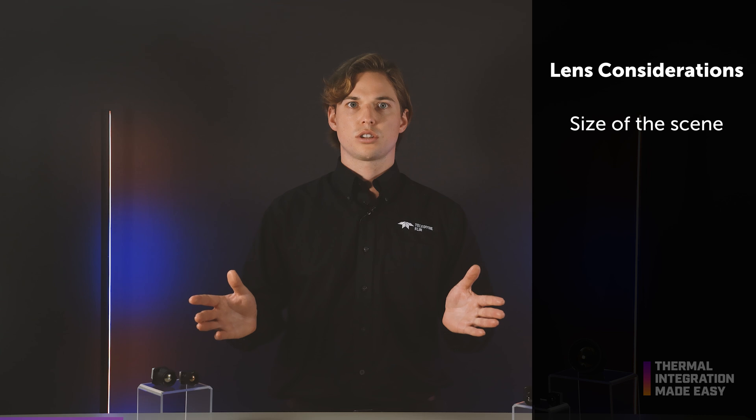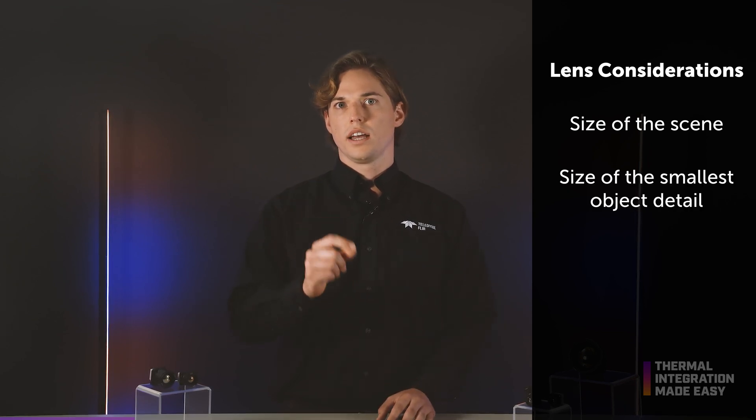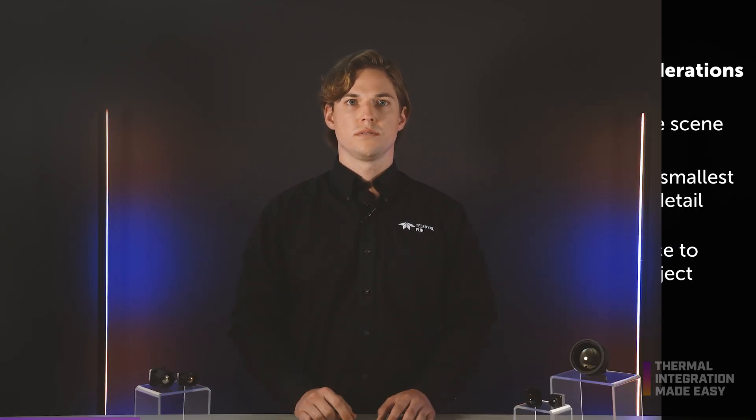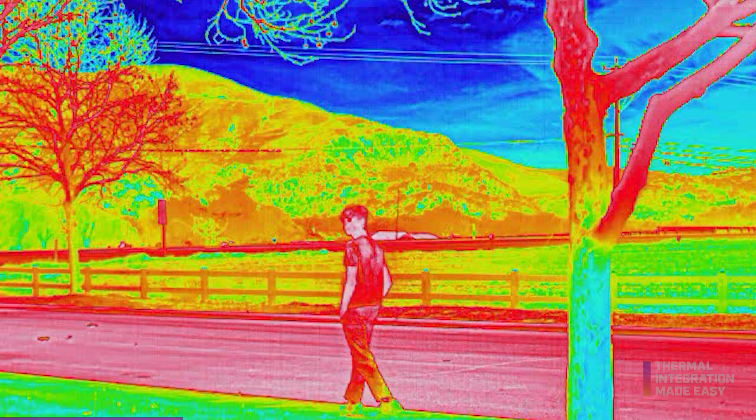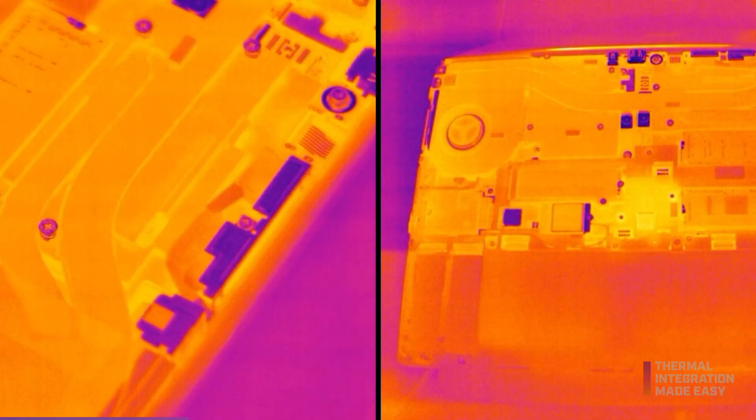There are many factors to consider when selecting a lens for your thermal camera, including how much of the scene you're trying to capture, the size of the smallest detail that you need to see, and the distance to the object. Ideally you want to select a field of view or FOV where the main subject fills the majority of the scene to achieve the best possible image. But sometimes that is not possible due to camera placement or the need to cover a large area, in applications such as surveillance and inspection.